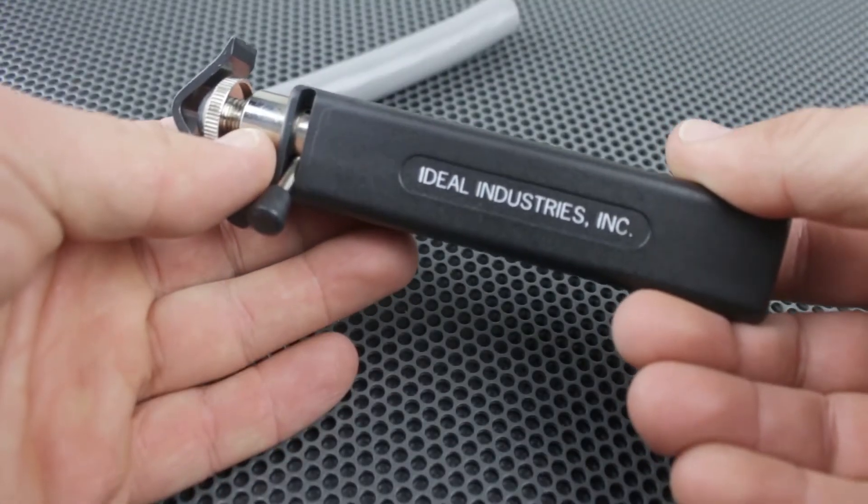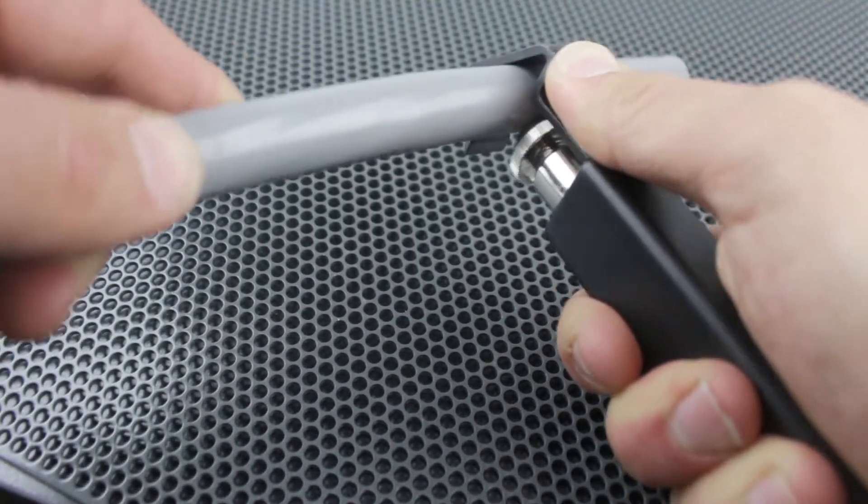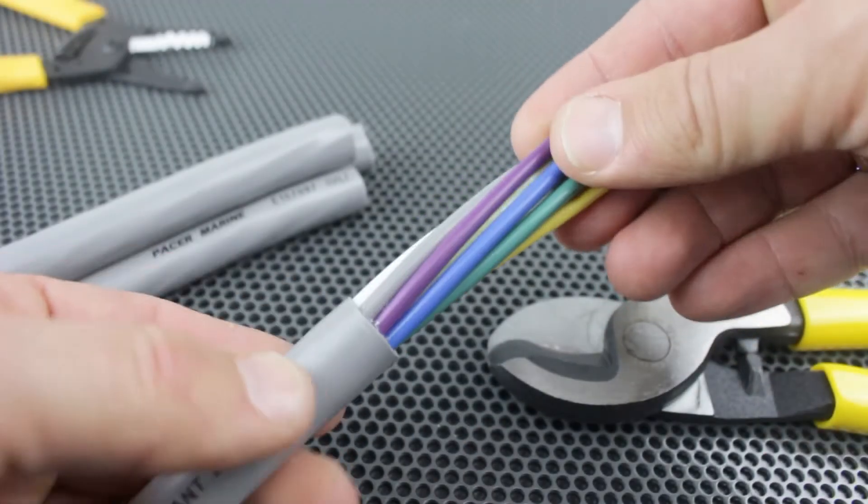After adjusting your blade to the proper depth, simply open the mouth of the tool and place it over the round cable. Make at least one full pass around the cable. You can pull the jacket off revealing the inner conductors.